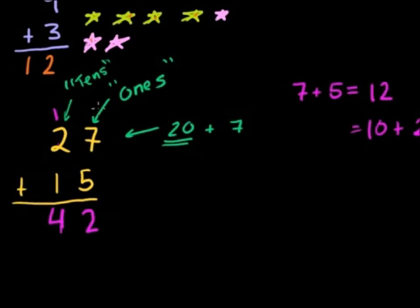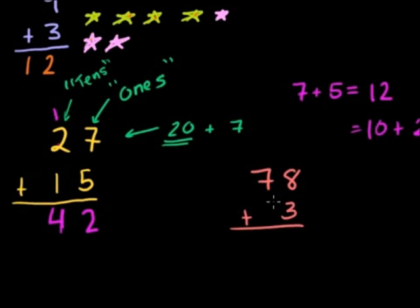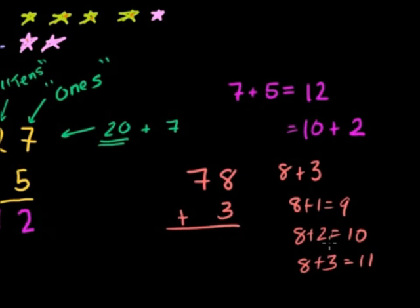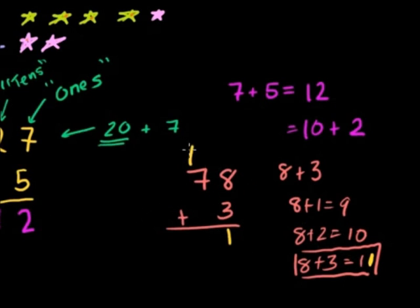Let's do a simpler example: 78 plus 3. We do the exact same thing — just look at the ones place: 8 plus 3. Let's think about it: 8 plus 1 is 9, 8 plus 2 is 10, 8 plus 3 is going to be 11. So 8 plus 3 is equal to 11. We put the 1 in the ones place and carry the other 1, because 11 is 1 ten plus 1 penny. Then we add the tens place: 1 dime plus 7 dimes is 8 dimes. So 78 plus 3 is equal to 81.